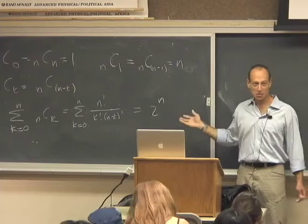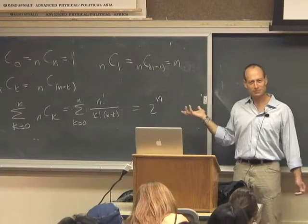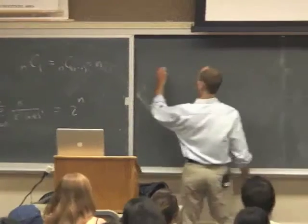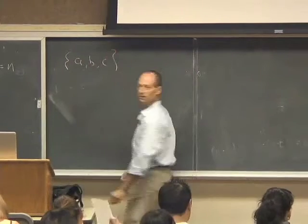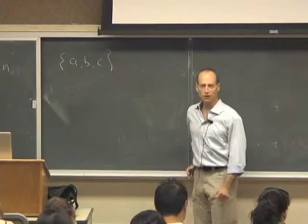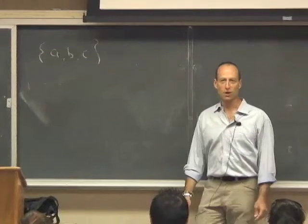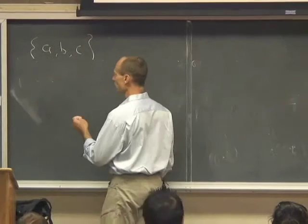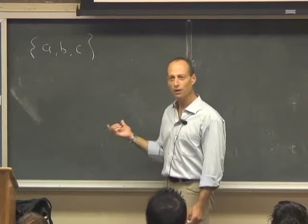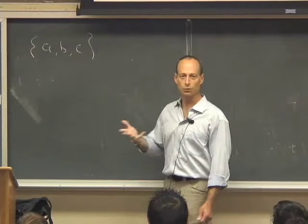So let's maybe make n equal 3. Let's say we have the original set {a, b, c}, and we want to write down all the subsets there are of that. We're going to divide it into subsets of size k, where k is going to go 0, 1, 2, 3. Those are the possible sizes of subsets.